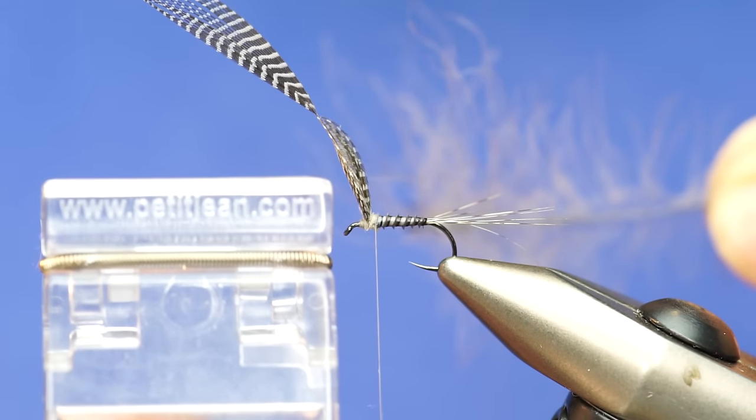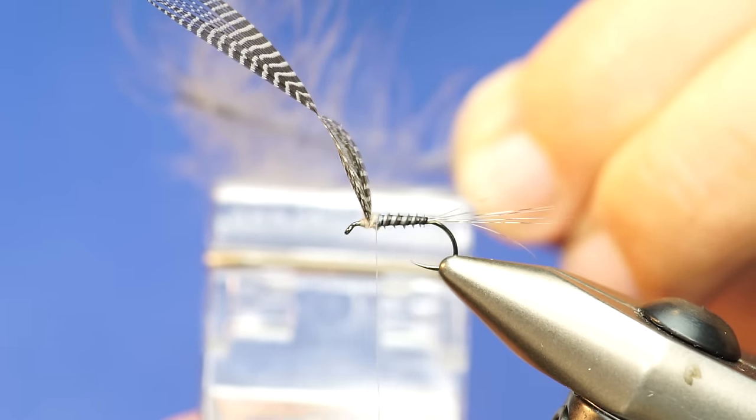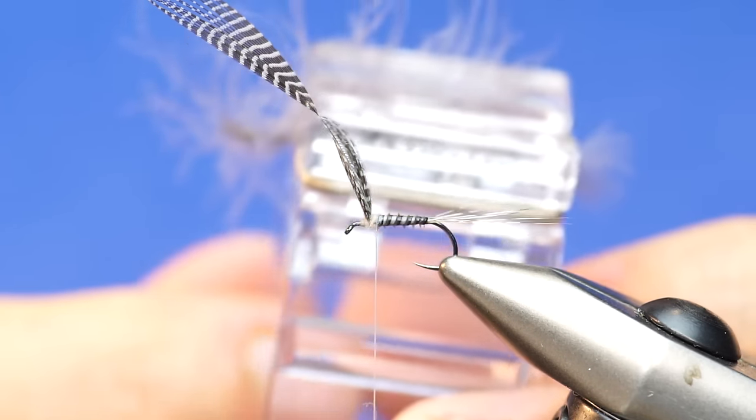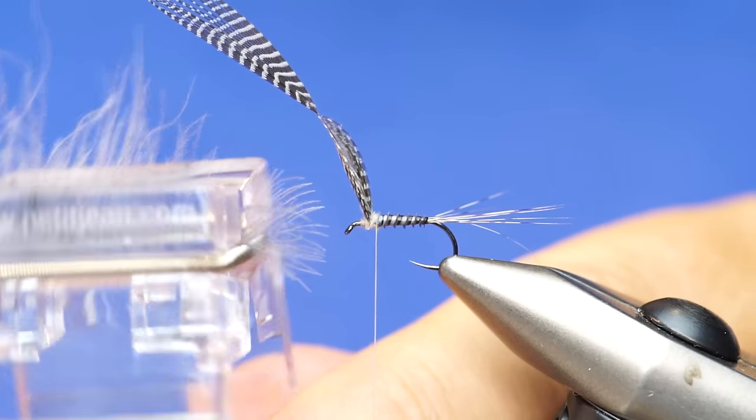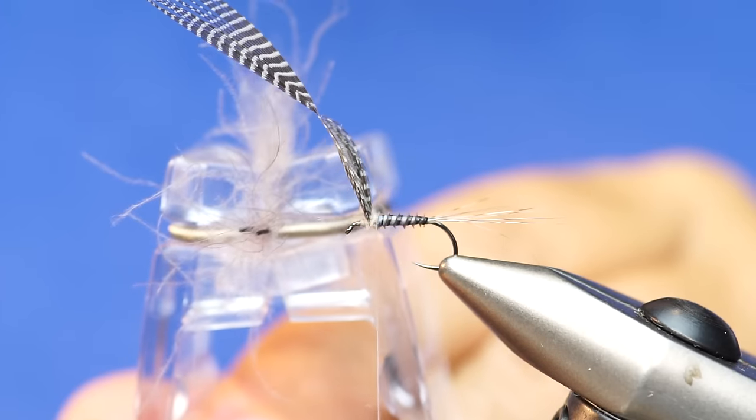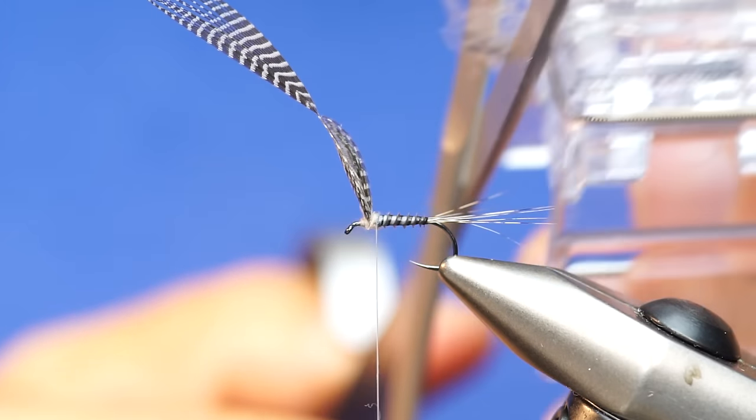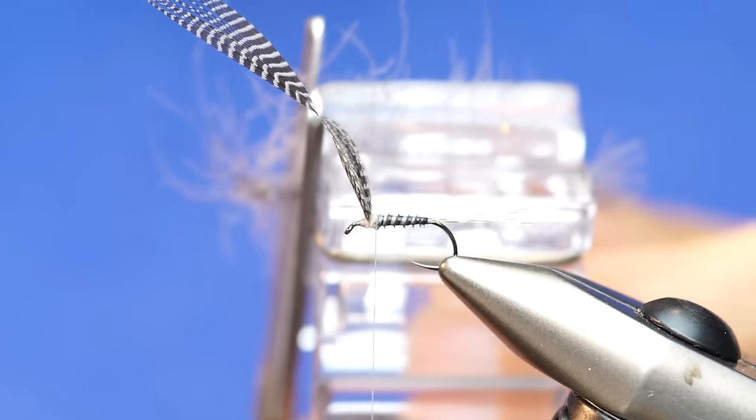Now I'm going to grab my Petitjean Magic Tool, the table micro set. I'm just going to seat these down in there. It's easier to do this on the table and I'm too lazy to change the camera angle, so you're going to have to deal with it. We've got the CDC now, both stems sitting in. I'm going to grab my fancy Petitjean scissors and just trim off the edges.